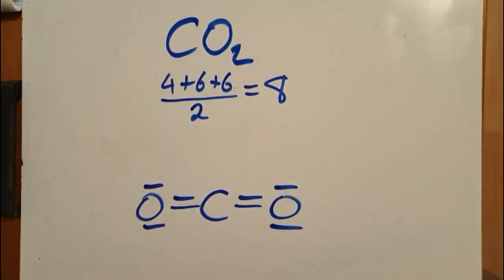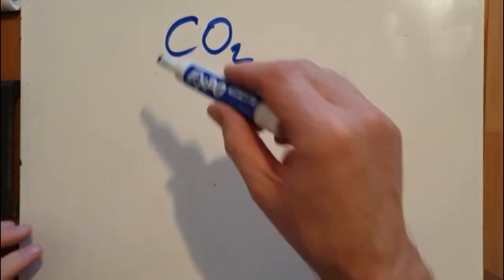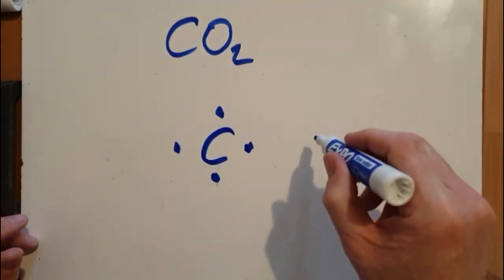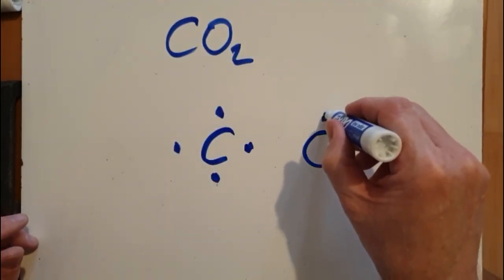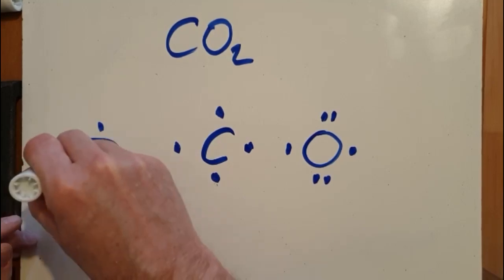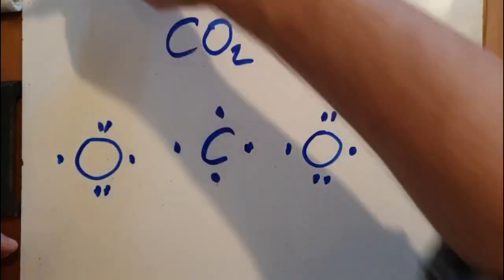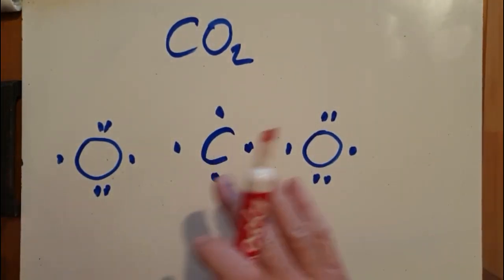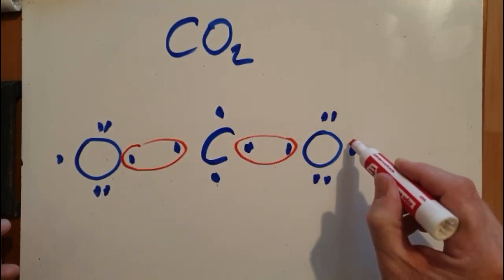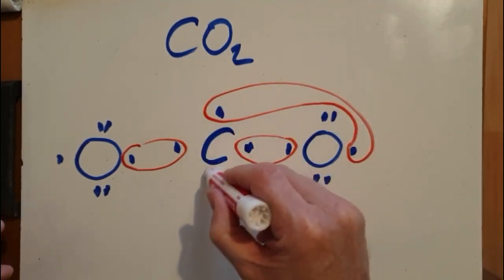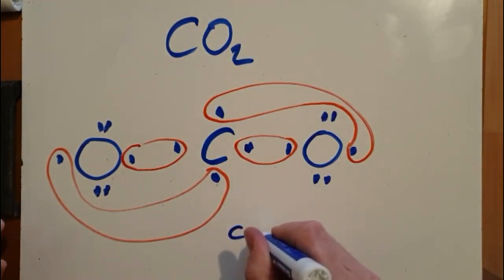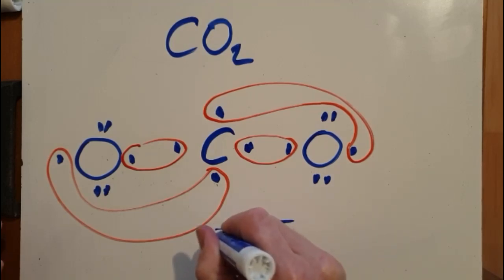There is another way to do this. Carbon goes in the center with four electrons. Oxygen is in group 16, so it has six electrons: one, two, three, four, five, six. Same for the other oxygen. Now electrons like to be paired, so you pair them up to make one molecule. Pair these, pair those — and of course it comes out the same thing as we started with. That's the second way you can do it; both ways are acceptable.